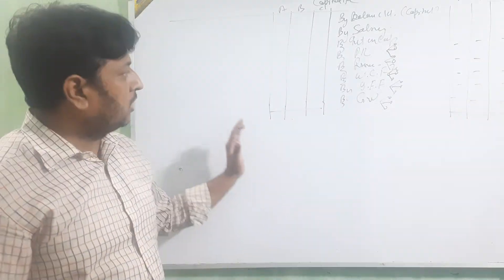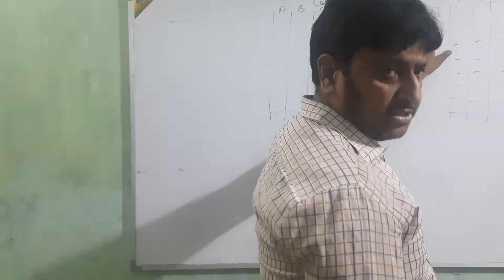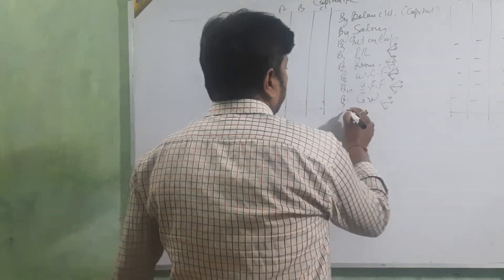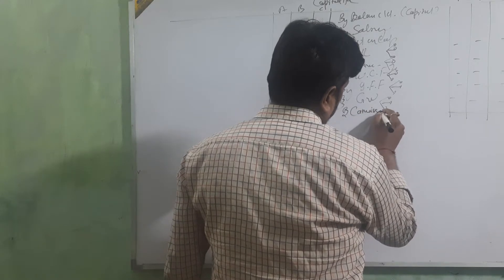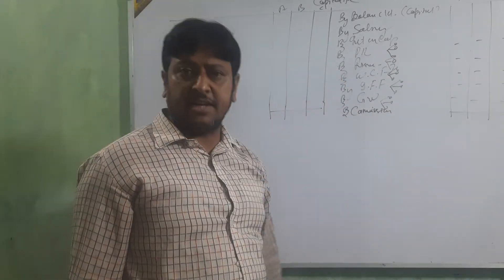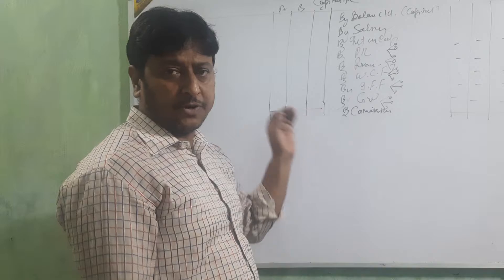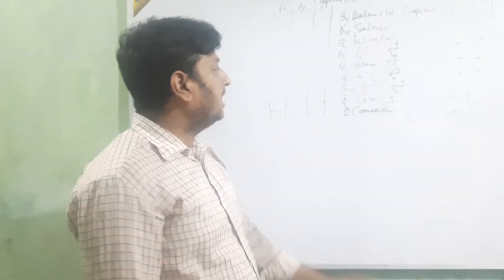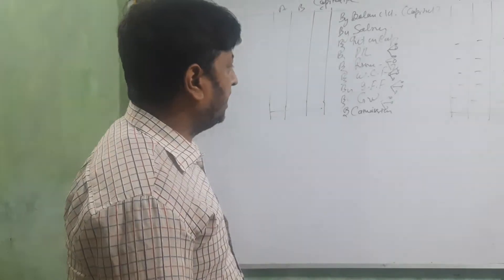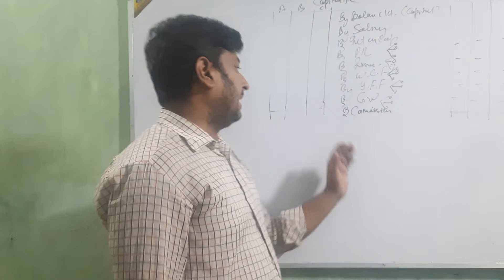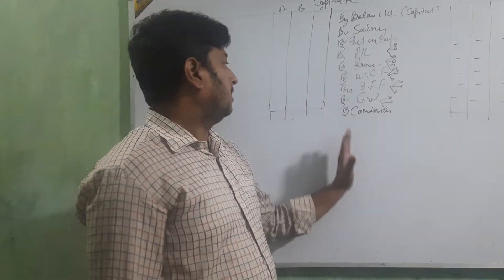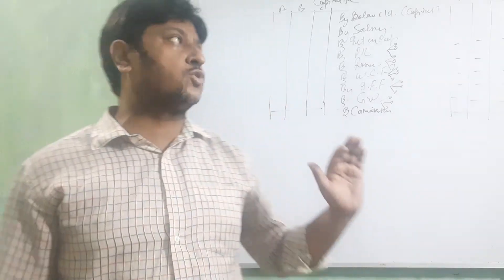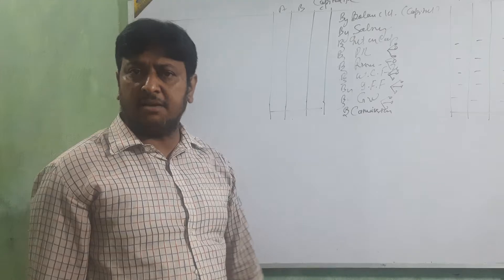On the credit side: balance means the capital given in the question, salary if they are getting salary, commission if they are getting it, interest on capital, profit distributed to partners, any type of reserve, workman compensation fund distributed to partners, investment fluctuating fund distributed to partners, any goodwill distributed to partners, and commission. All things received by the partners are shown on the credit side.